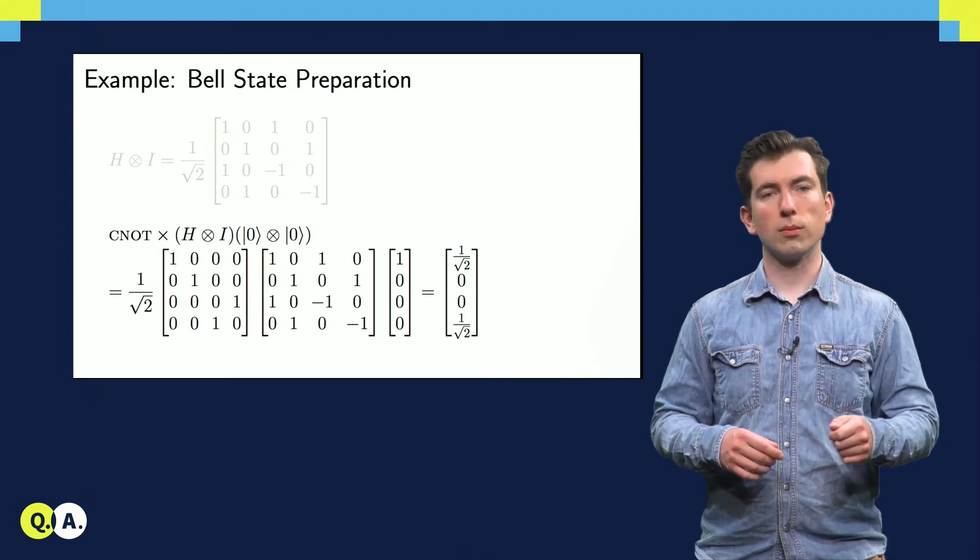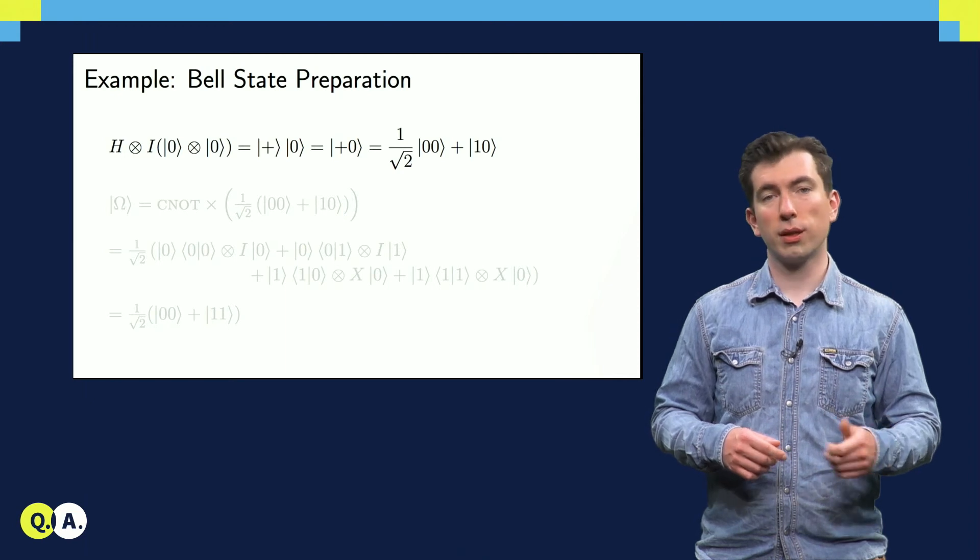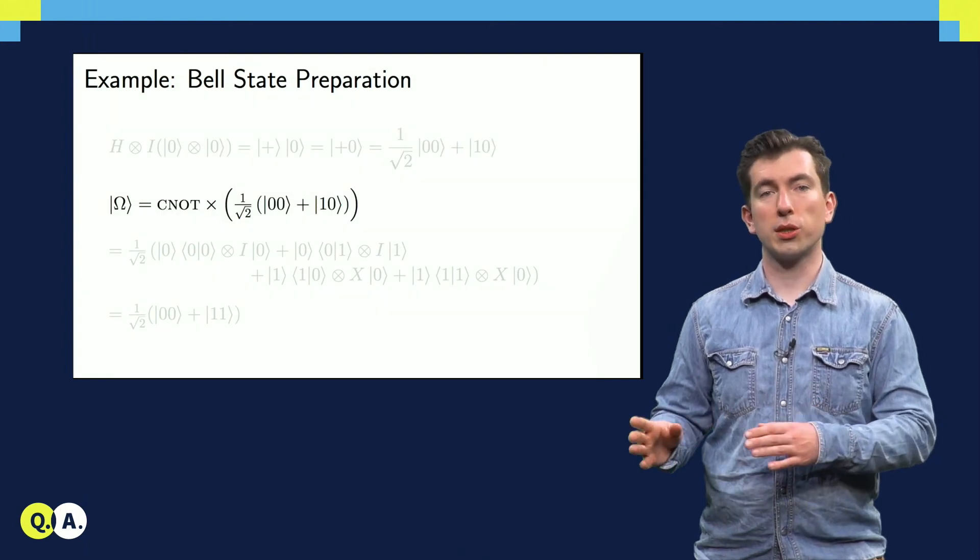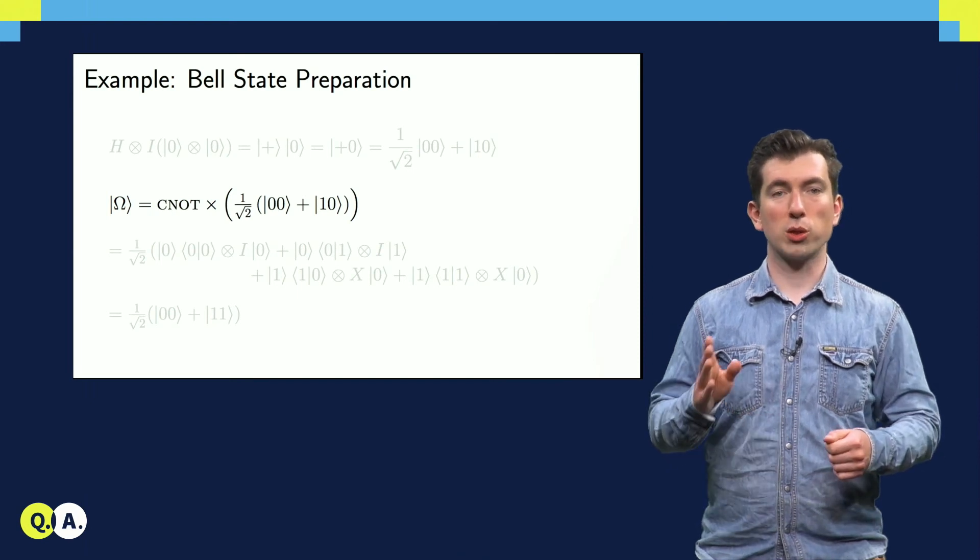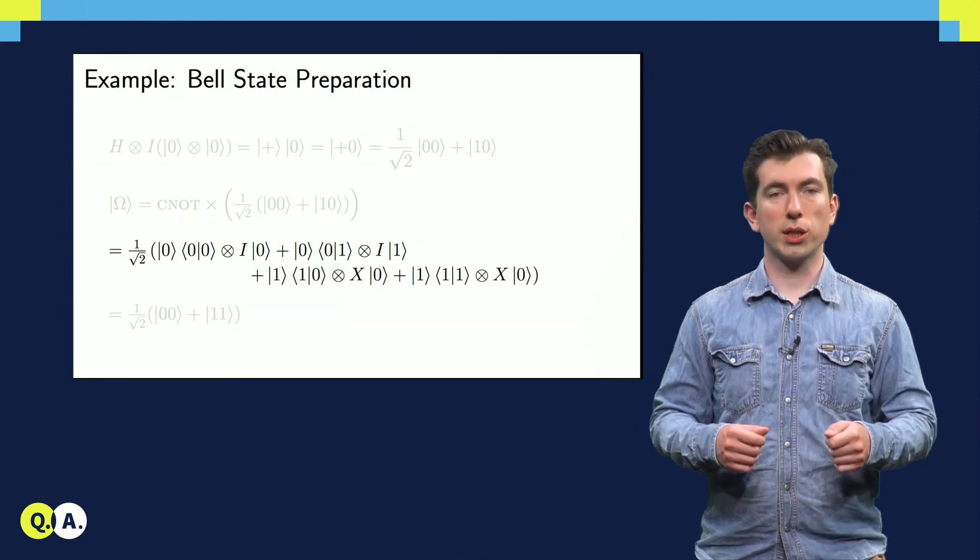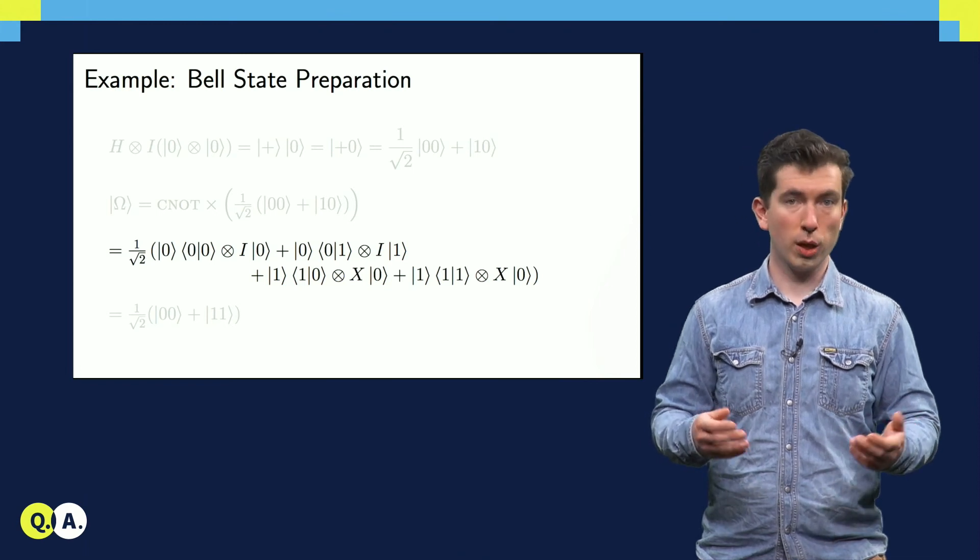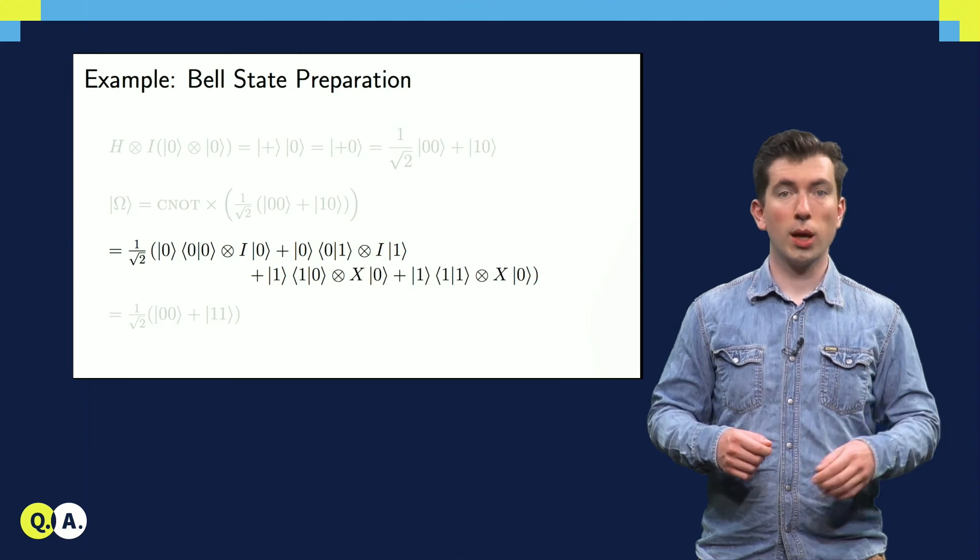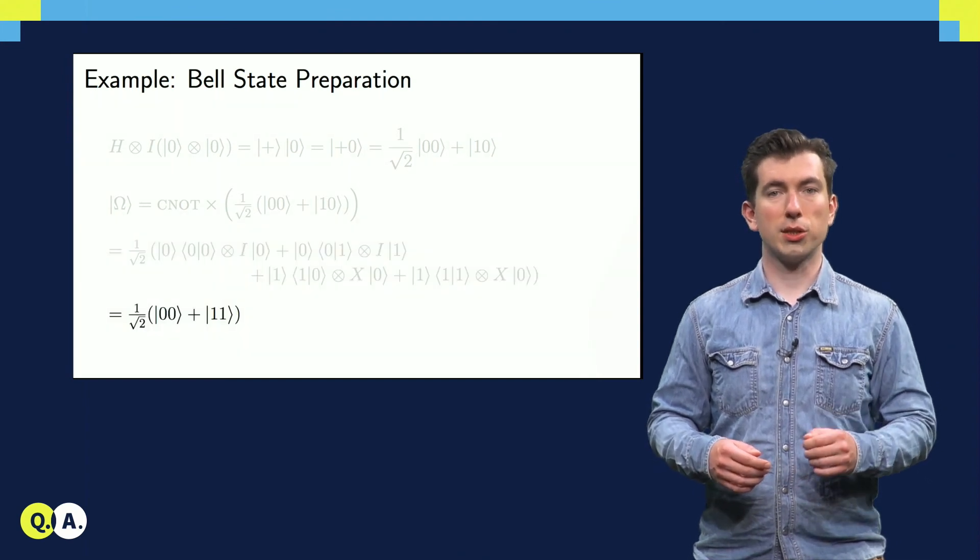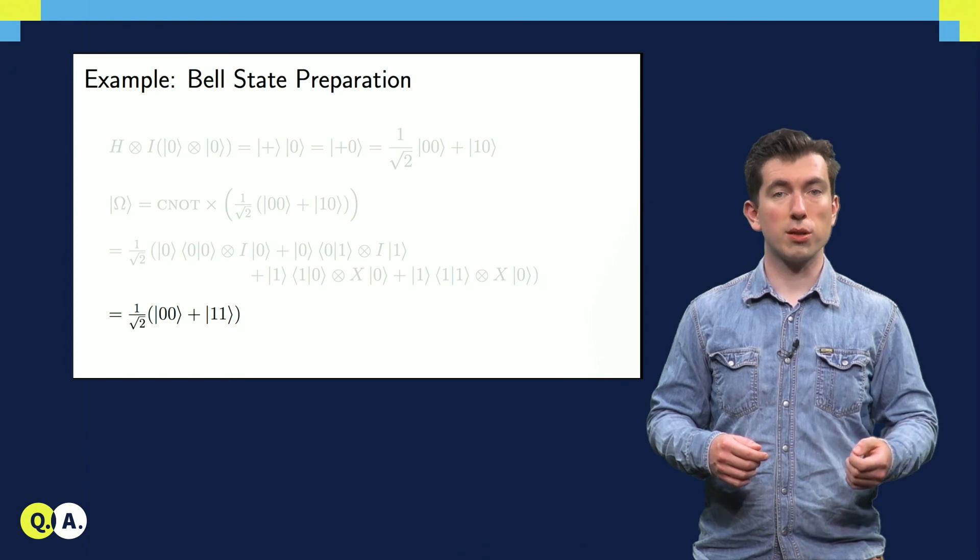First, we use the compatibility of the Kronecker and regular products to show that the state we get from executing the Hadamard on the first qubit is simply plus 0 without having to use any matrices. Now, all we have to show is that the CNOT will take our state to the state that we're after. If we insert the decomposition of the CNOT into tensor products that we saw earlier, we can see that the resulting state has coefficients proportional to these inner products of the 0 and 1 states. Of course, the 0, 1 basis is orthonormal, so the products 0, 0 and 1, 1 evaluate to 1, and the products 0, 1 and 1, 0 evaluate to 0, leaving us with two remaining terms. These terms are exactly the 0, 0 and 1, 1 terms that we were after. And that's how ket notation can help us to describe the effects of operations and measurements on quantum states.